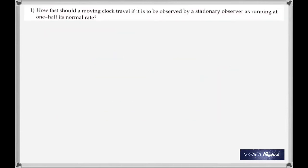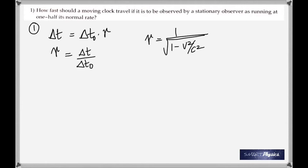Question number one talks about how fast should a moving clock travel if it is to be observed by a stationary observer as running at one-half its normal rate. This is obviously about time dilation, so we use the formula for time dilation, and gamma is always calculated using this formula: one by square root one minus v squared by c squared. So you've got to do that first, calculate gamma first.